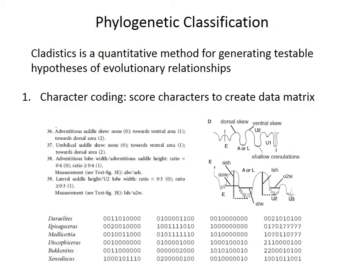The first step in generating a cladogram is to code characters, or morphological features — typically dozens to more than a hundred features. These features are chosen and assigned discrete states, such as presence or absence. In the example illustrated here, features are chosen for ammonite sutures and coded based on the orientation of specific lobes, producing a character matrix.